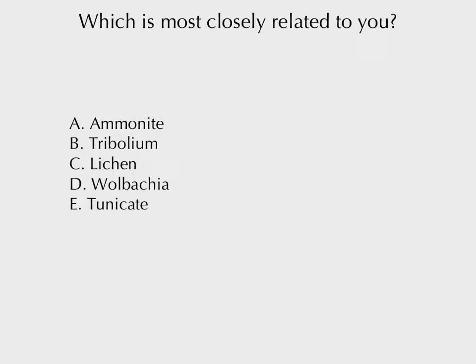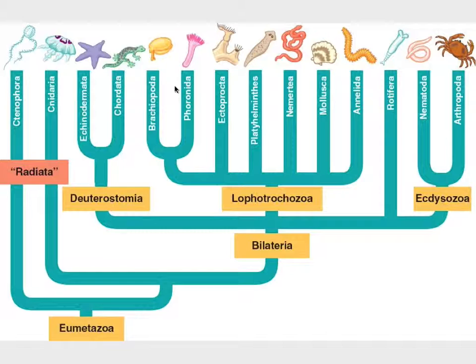Tunicates are a subgroup of chordates — it's also the taxonomy of the day for today. They're within chordates, so the cylinders are here, so are you, so are tunicates. Nematodes are actually echinoderms. Any questions about this?